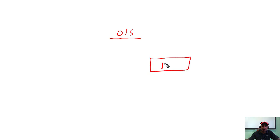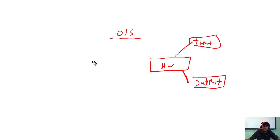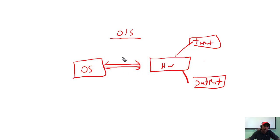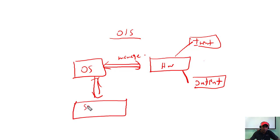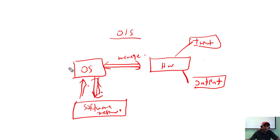In the diagram, the operating system sits between hardware — which includes input and output devices — and the application programs above. The operating system manages hardware and software resources, and provides a platform to run application programs.